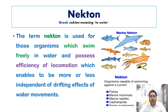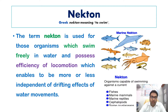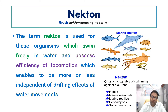The only difference between nekton and plankton is that plankton are at the mercy of the water current — they are unable to swim against it. In contrast, all nektonic organisms have the ability and efficiency of locomotion.